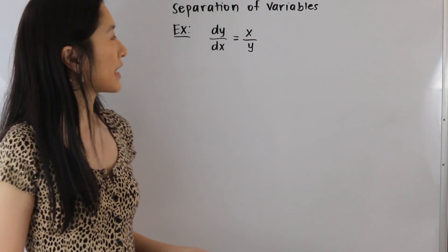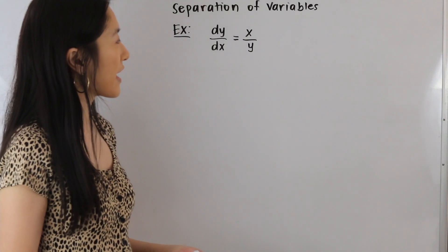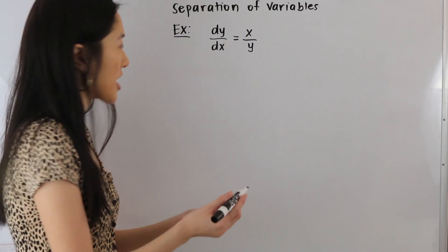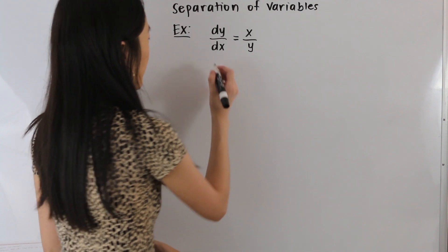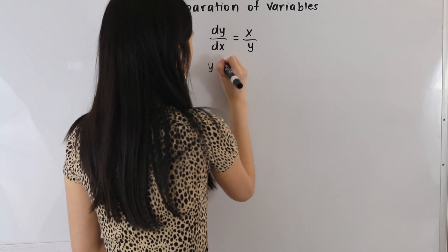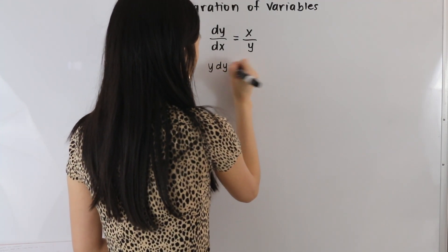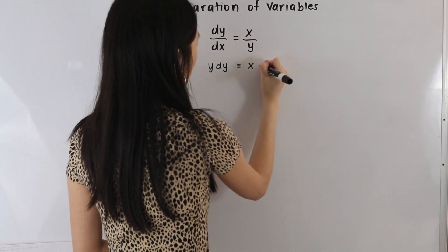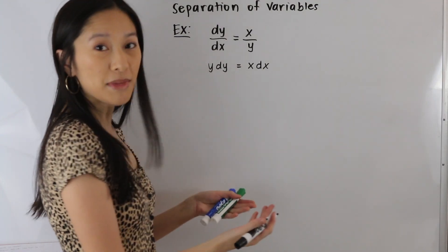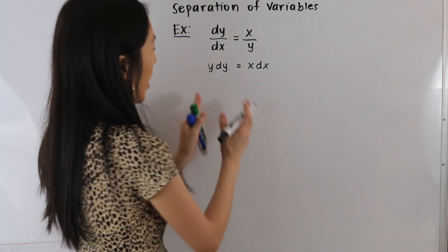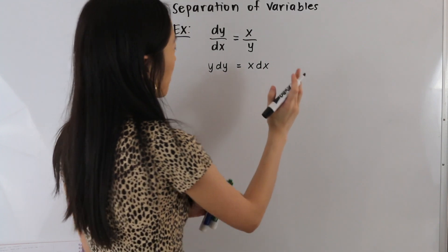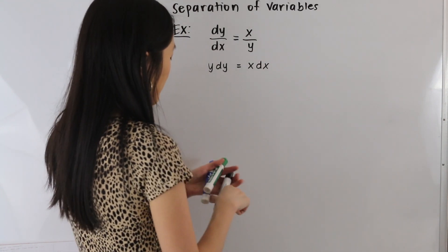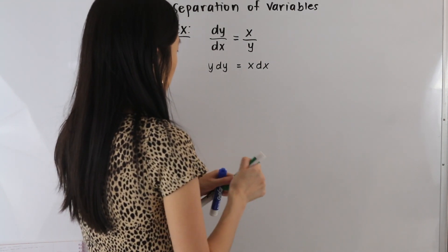In this first example, we have dy over dx is equal to x over y. Let's start out by doing some cross multiplication. We get y dy on the left hand side, and on the right hand side we end up with x dx. Now we have all of our y variables on one side and all of our x variables on the other, so we can go ahead and integrate both sides.